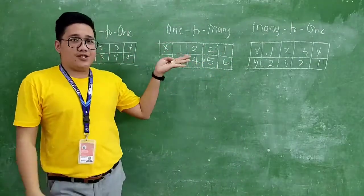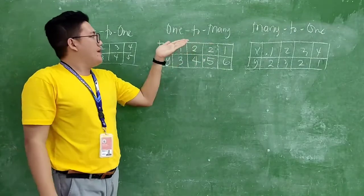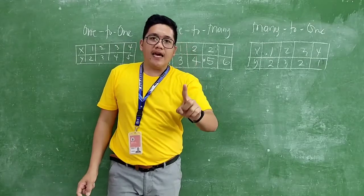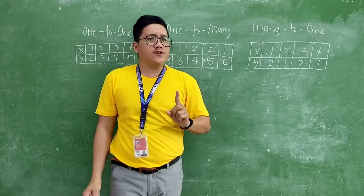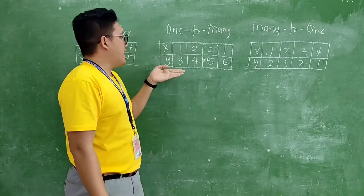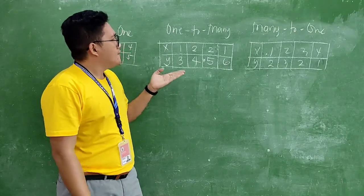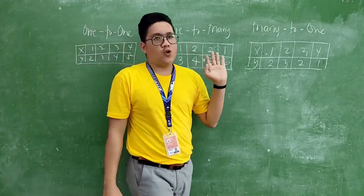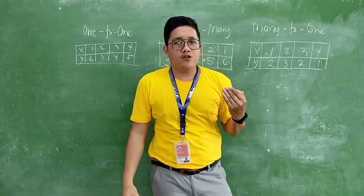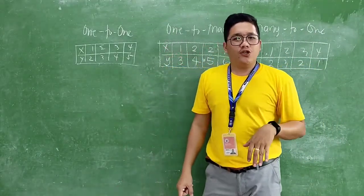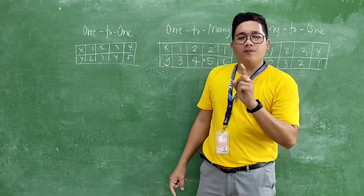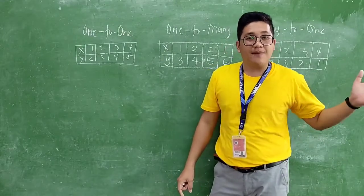For 1-to-many — from the word itself — meaning if an element in set A is connected or has a relationship with 2 or more elements in the y values. In real life, itong relationship na ito ay tinatawag nating masyadong toxic na relationship — hindi contento sa isa. 1 to many, parang isang tao pero madami siyang kabit.